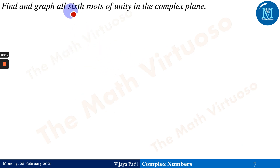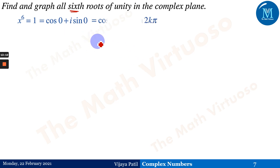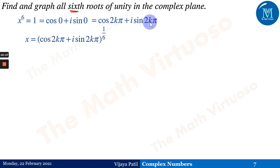Now let us find and graph all sixth roots of unity in the complex plane. Sixth root of unity means x⁶ = 1. We express 1 as cos 0 + i sin 0, which gives cos(2kπ) + i sin(2kπ). Therefore x = [cos(2kπ) + i sin(2kπ)]^(1/6) = cos(2kπ/6) + i sin(2kπ/6).